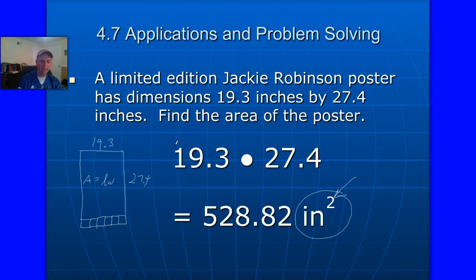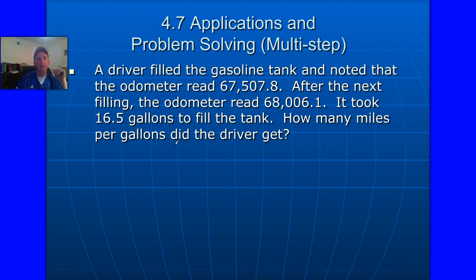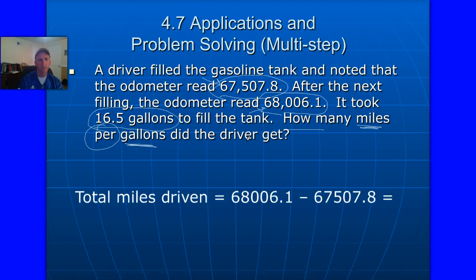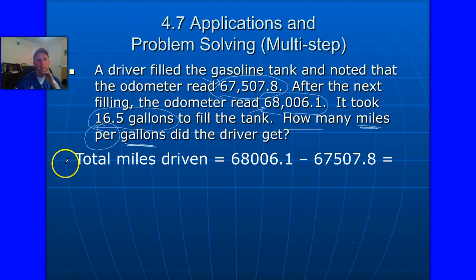And let's do the last question here, this multi-step question, and we'll be done with chapter 4. So what you see happening here is now that you have your calculator, the expectation will go up that you can take a paragraph, turn it into a math problem, and solve it. So here we have a driver filling a gas tank. Note that this is what the odometer read, and then after the next filling, it read this. So he fills up his gas tank. Before he did it, it had this mileage. Drove. Ended up with this mileage. And then he figured out that it took 16.5 gallons to fill the tank. So they're asking, how many miles per gallon did the driver get? Well, in order to do this, the first thing we need to do is figure out, how many total miles did he drive? And you'd find that by subtracting. He drove 498.3 miles, or almost 500 miles.